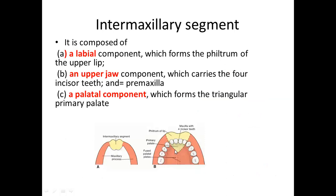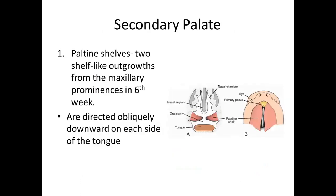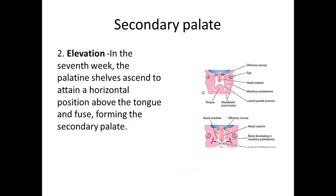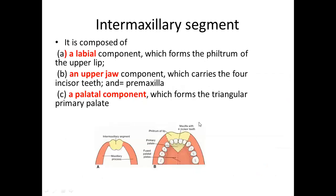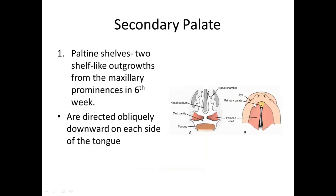To summarize, the intermaxillary segment is made up of three components: a labial component contributing to the philtrum of the lip, the upper jaw or pre-maxilla which carries the four upper incisor teeth, and a palatal component lying anterior to the incisive fossa.